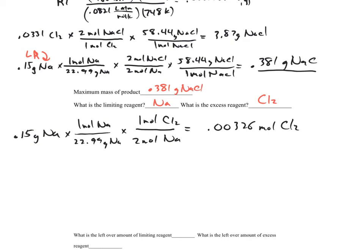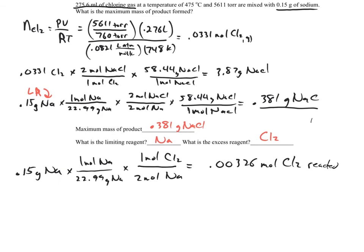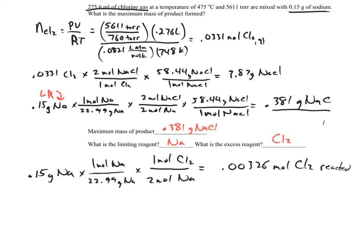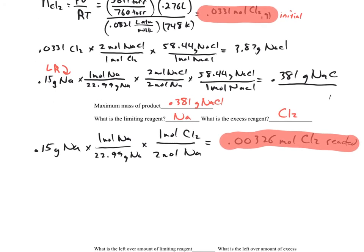So only 0.00326 moles of chlorine actually reacted, so I'm going to label that as reacted. We'll see why we left it as moles. If we look at the moles of chlorine that are initial, and we've got this that's reacted, we can subtract those two and that will give us the moles that are left.